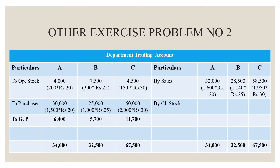Now we will start with the Departmental Trading Account. Opening Stock is valued at the sale price: 4,000 rupees for Department A (200 units × 20 rupees), 7,500 rupees for Department B (300 units × 25 rupees), and 4,500 rupees for Department C (150 units × 30 rupees). Purchases: 30,000 rupees for Department A (1500 units × 20 rupees), 25,000 rupees for Department B (1000 units × 25 rupees), and 60,000 rupees for Department C (2000 units × 30 rupees).